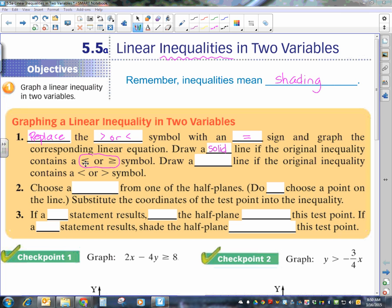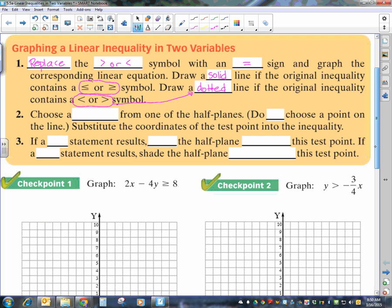You're going to draw a solid line if the inequality has an equals with it. So, that extra symbol there means that you're going to have a solid line. You're going to have a dotted line if the original inequality does not have the bottom line with it. So, if you don't have as many lines in your symbol, then you're not going to have as many lines when you actually draw it. It'll be dotted versus solid.